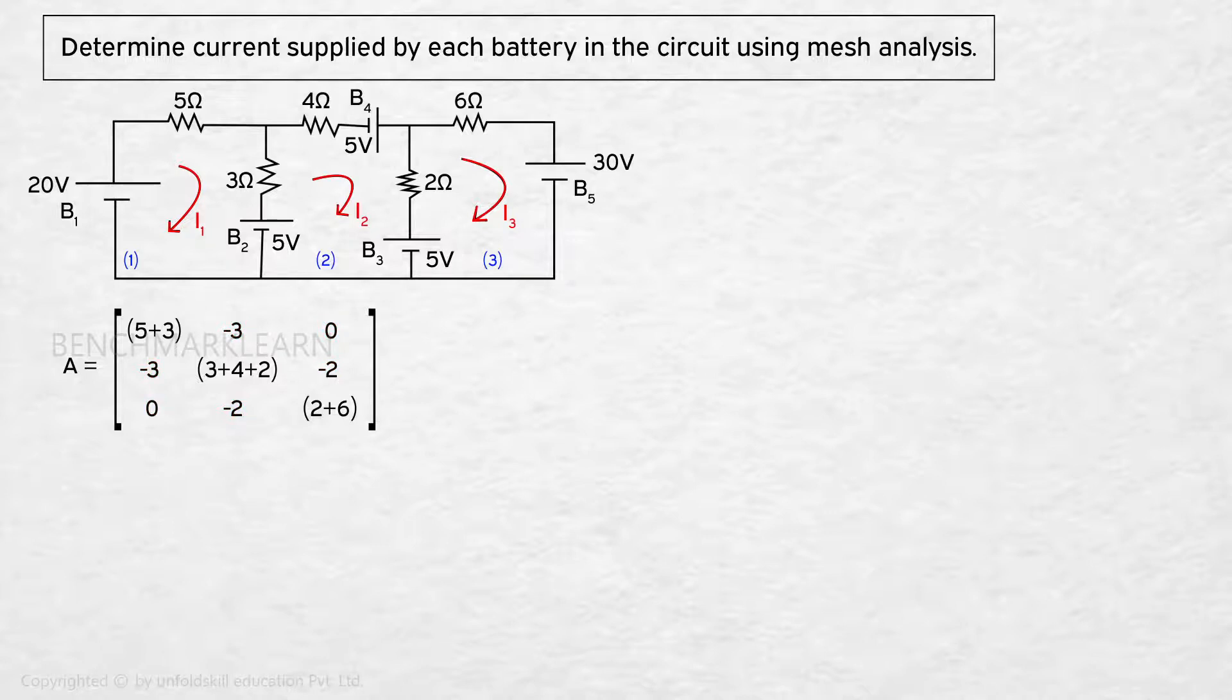That is matrix A equal to 5 plus 3, minus 3, 0, minus 3, 3 plus 4 plus 2, minus 2, 0, minus 2, 2 plus 6. Or matrix A equal to 8, minus 3, 0, minus 3, 9, minus 2, 0, minus 2, 8.